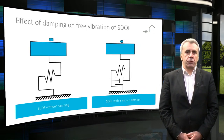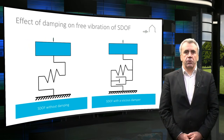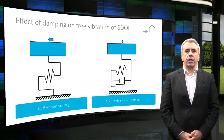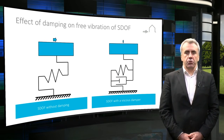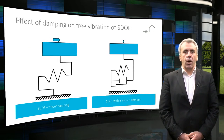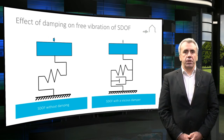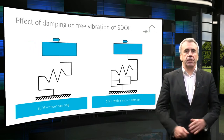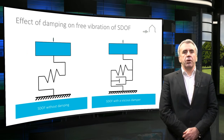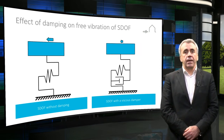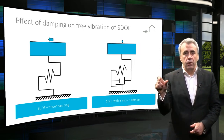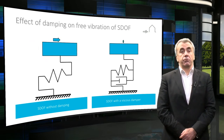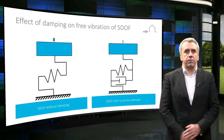What does damping do to structures? This slide shows the effect of damping on free vibration of the structure. We can see that while the structure without damping keeps vibrating indefinitely if kicked, for example, vibration of the structure with damping decays with time and becomes smaller. Naturally, the latter scenario is the realistic one — nothing vibrates forever.